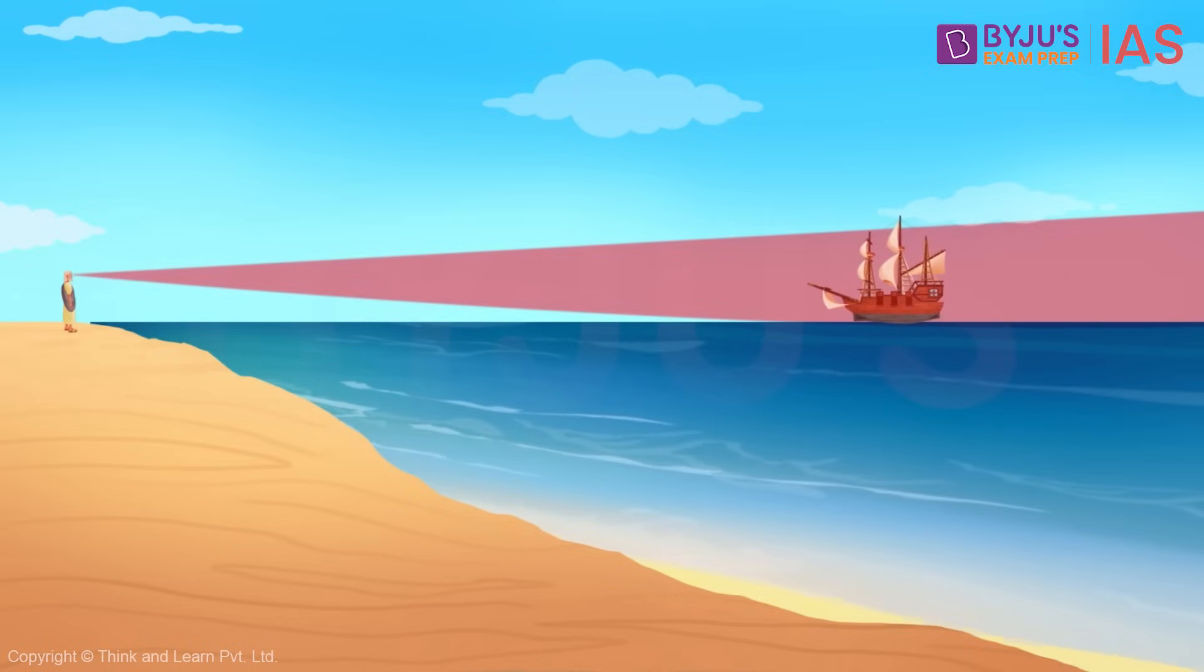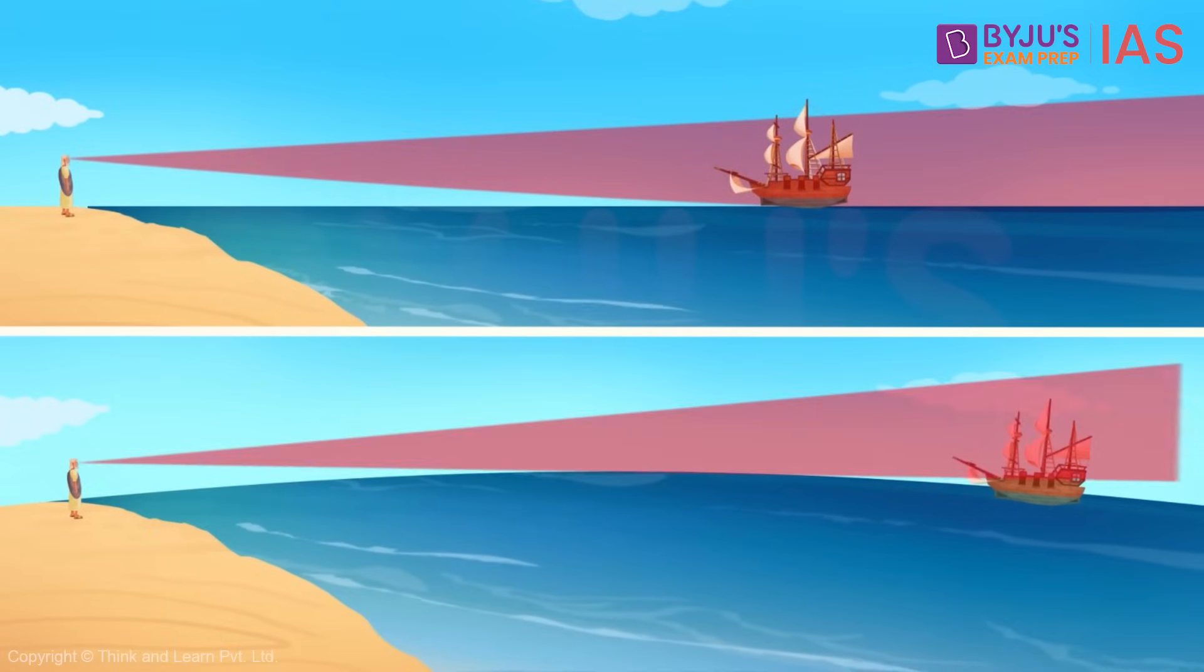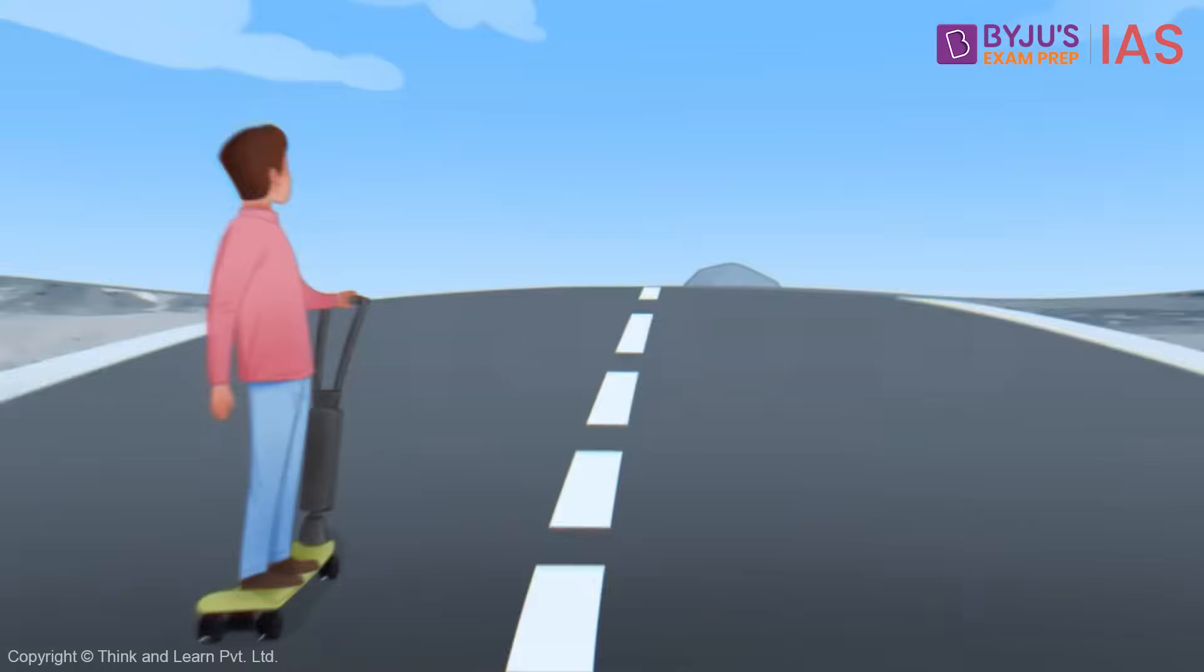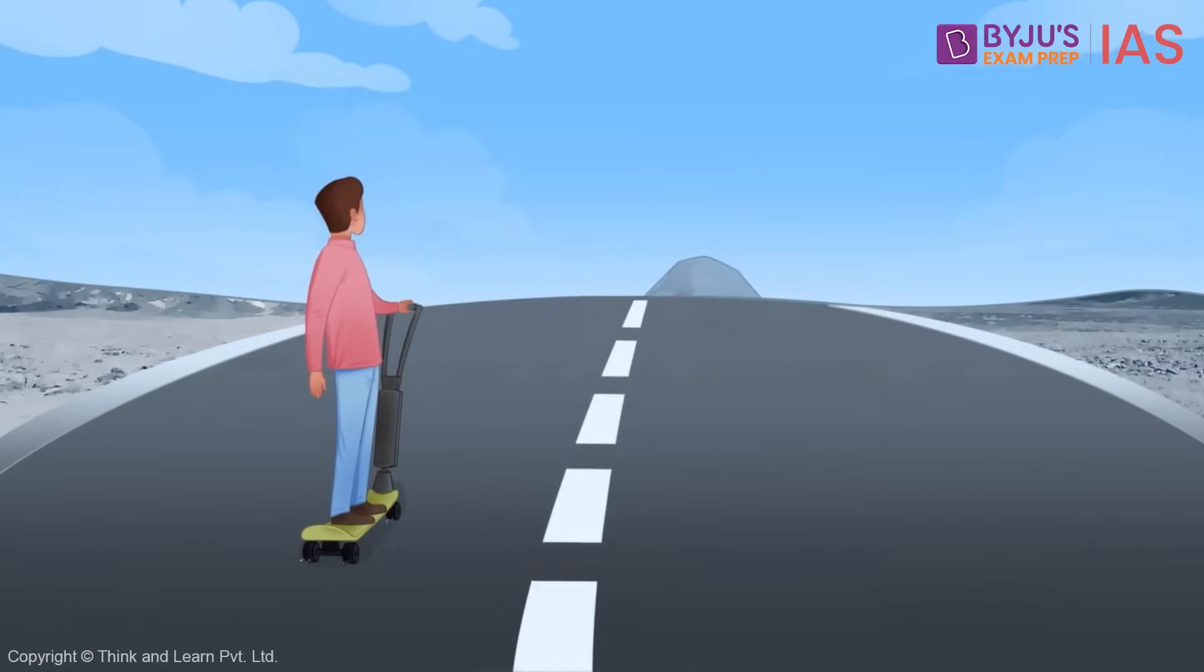This observation can be explained only if we assume that Earth has a curvature and that's why we see the mast first and then the whole ship. Another example could be when you approach a mountain.